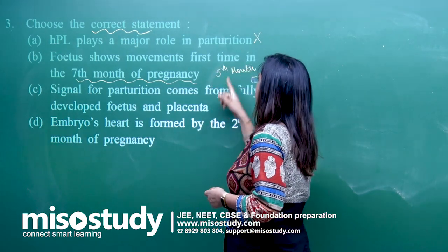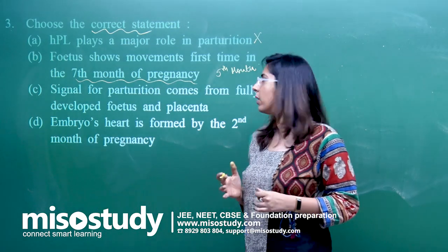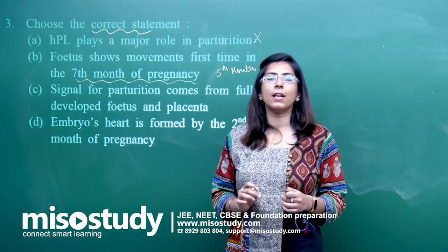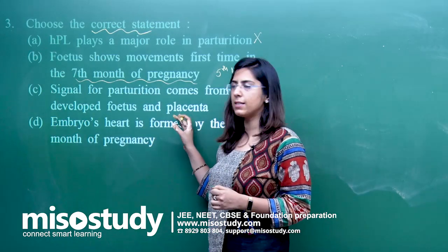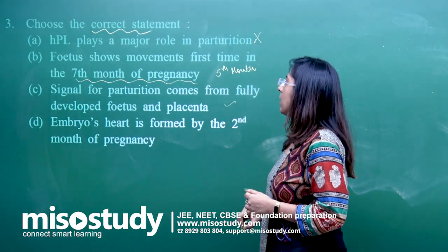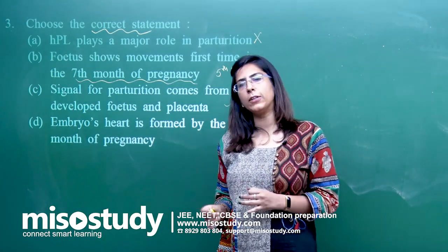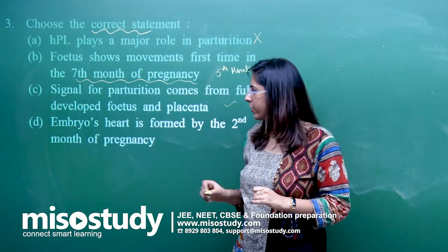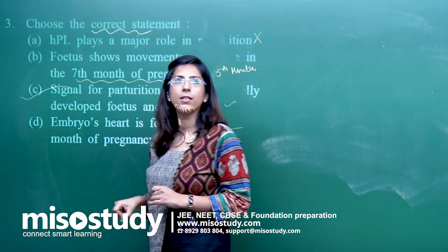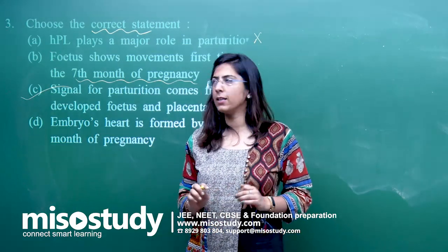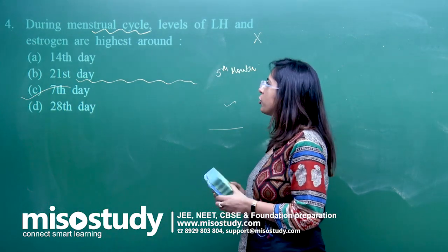Option C: the signal for parturition — giving birth to a baby — comes from the fully developed fetus and the placenta. This is absolutely right. Option D: the embryo heart is formed by the second month of pregnancy — that is also incorrect; the heart is formed at the end of the first month. So the correct option for question 3 is C.